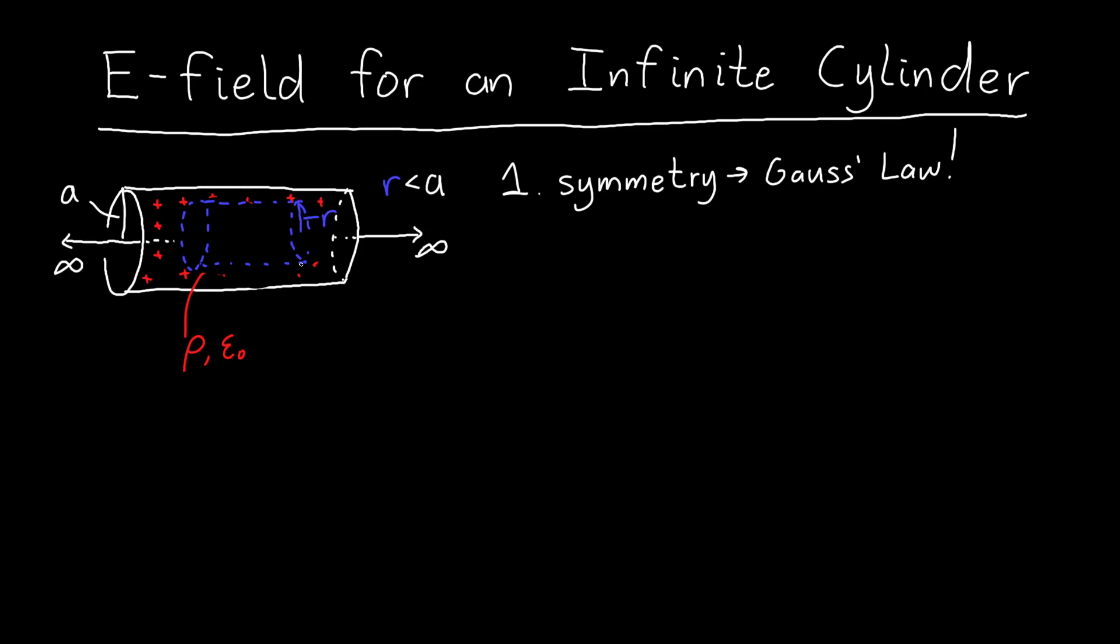The next question is what length should my Gaussian surface cylinder be? I really don't know and I hope that it doesn't matter, so I'm going to just choose my length to be L. I'm just going to call it L and then hope that it ends up not mattering in the end.